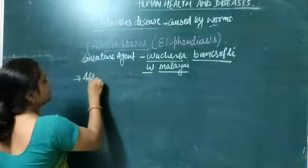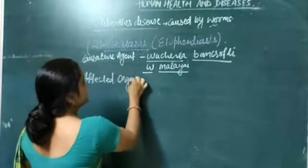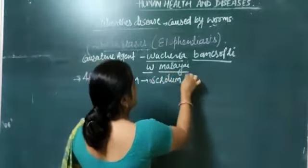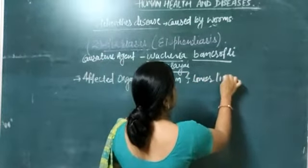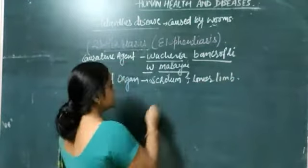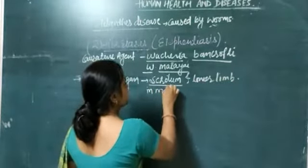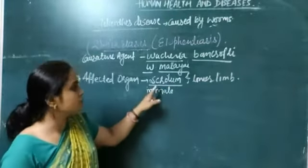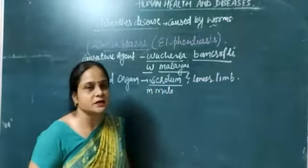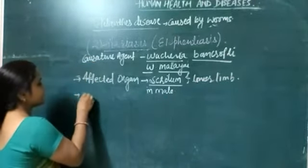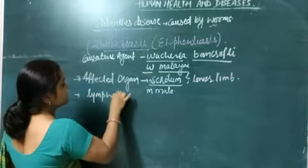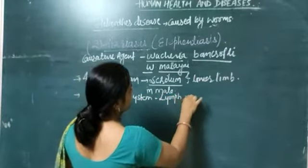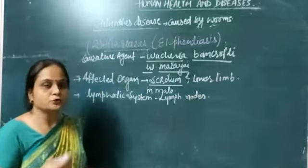The affected organs are the scrotum and lower limbs. The scrotum is present in males — it is the bag that provides protection and normal temperature to the testes. Infection generally occurs in the lower limbs, and symptoms are visible there. Basically it affects our lymphatic system, specifically the lymph nodes.